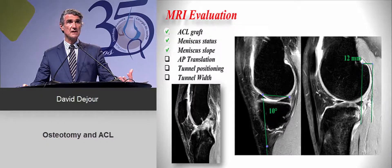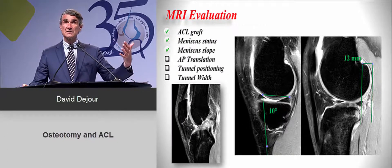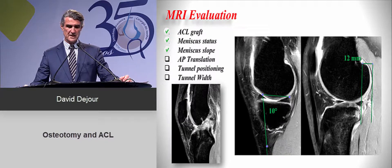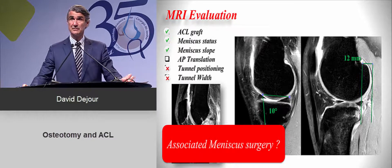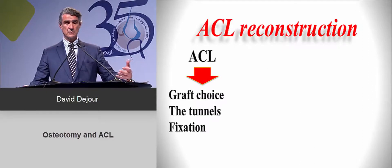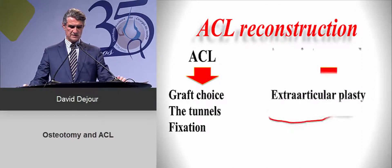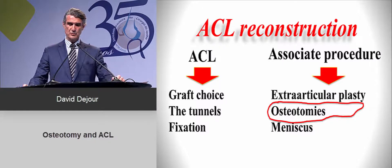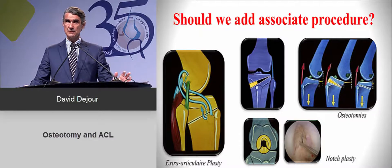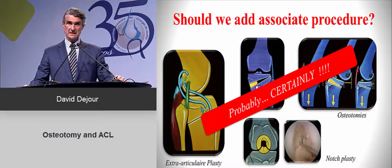This screening may lead you to do some associated procedures and adapt the post-operative program. MRI evaluation is also important because it gives you the meniscus status, shows the soft-tissue tibial slope, and lets you quantify the amount of translation. You will know exactly if you need to do additional meniscus surgery. For the revision reconstruction, I will look specifically at associated procedures — and especially osteotomies.